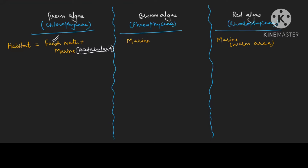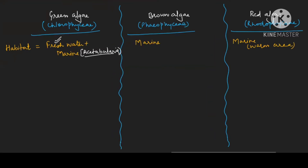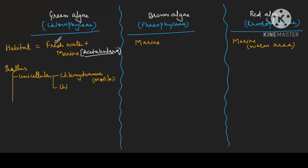Next we will focus with respect to thallus organization. In the thallus of green algae, we find unicellular forms. One unicellular example is Chlamydomonas, which is motile.